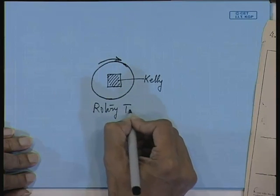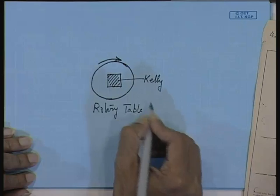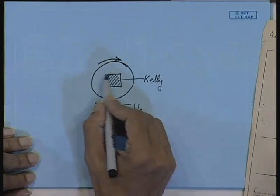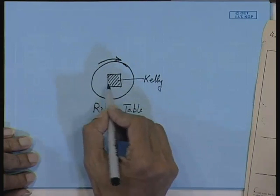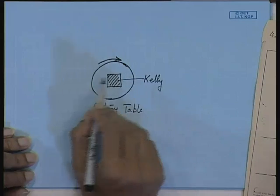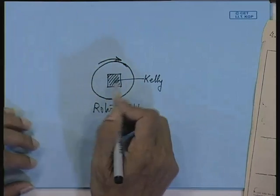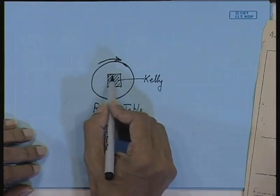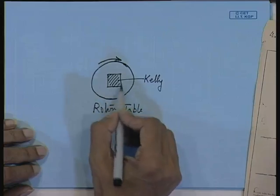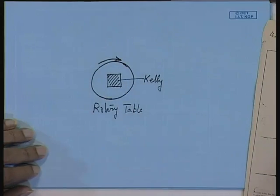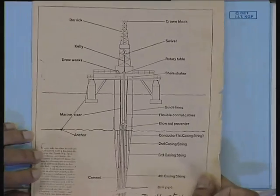The kelly goes down through this square hole. The rotary table is given a torque — this is the direction of rotation. The kelly must be rotated, which is why the hole is square. If you made it round then the grip would only be friction grip, but here there is no chance of slippage — that is why it is given a square hole.